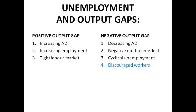In a negative output gap, decreasing demand leads to a negative multiplier effect and cyclical unemployment — lack of demand means lack of demand for labour, and lots of people lose their jobs. This leads to discouraged workers, especially during long periods of negative output gap. People may leave the labour market entirely and spend their lives on benefits, which leads to a budget deficit. In negative output gaps, governments often use fiscal and monetary policies to encourage employment rather than focus on reducing inflation.